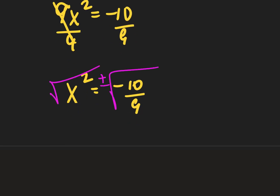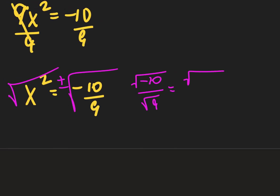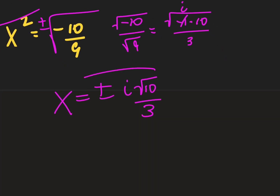So now we take the square root. When you put the square root on, plus or minus goes in front of your answer. This is the square root of negative 10 over the square root of 9, which becomes negative 1 times 10 over 3. So x equals plus or minus — the square root of negative 1 is i, so the i comes out, the 10 stays underneath, and the square root of 9 is 3. Remember, if you have a radical in the denominator at this step, you have to rationalize and get it out.